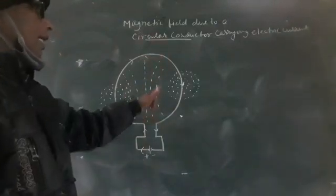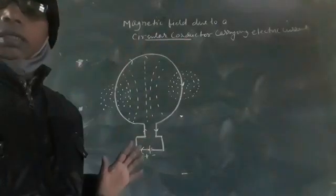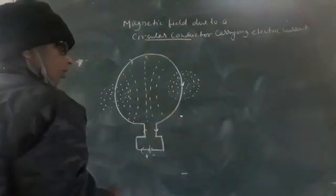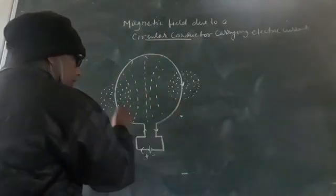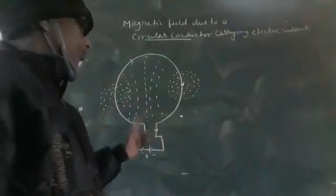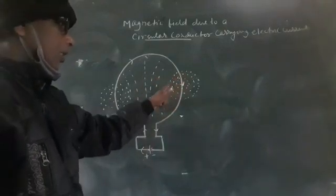This behaves as a current carrying conductor circular in nature. On gently tapping the paper, it is found that iron filings arrange themselves in several concentric circles.